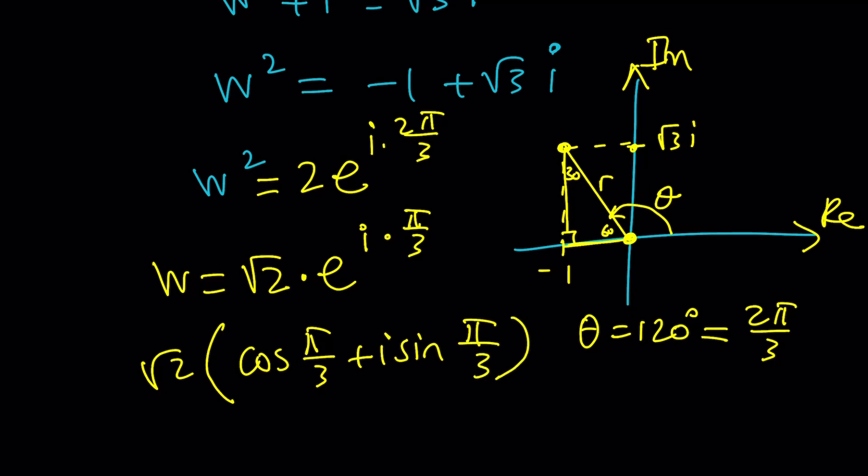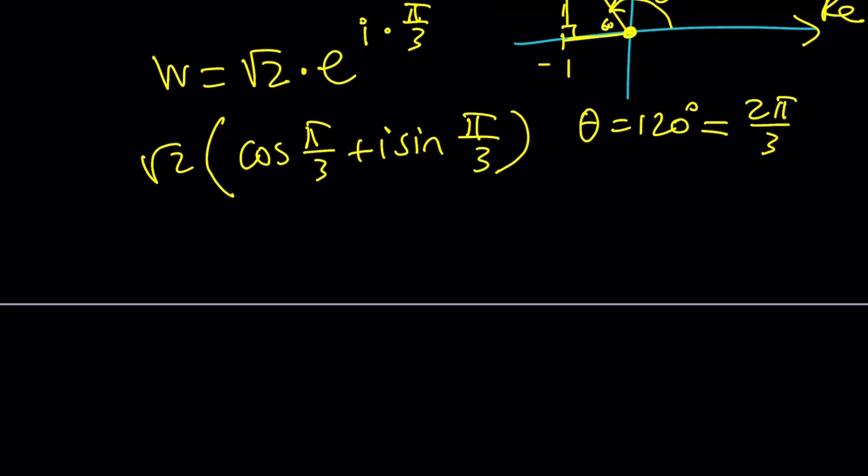And then this is just going to become, cosine of 60 is 1 half, it's going to be like root 2 over 2. And sine of pi over 3 is root 3 over 2. If you multiply by that, you're going to get the square root of 6 over 2. This is what I meant by if I told you what it is, you probably wouldn't believe this.